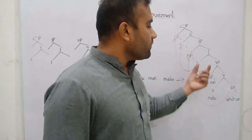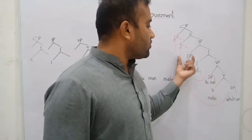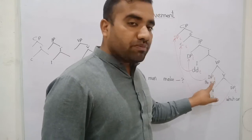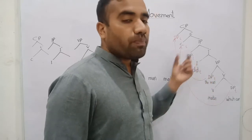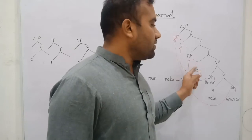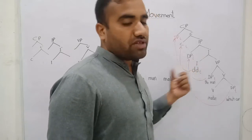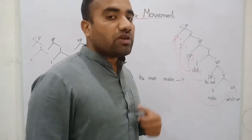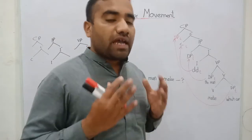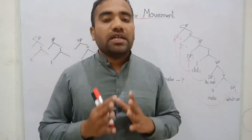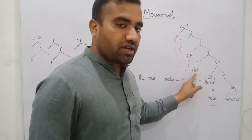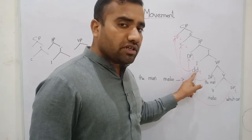Due to the EPP requirement, the argument moves from its base position to the specifier of IP, leaving a trace at the base position. Then we have the I head, which carries past tense 'did.' If we want to construct an interrogative sentence, we have to consider the head strength, since heads can be strong or weak in languages.